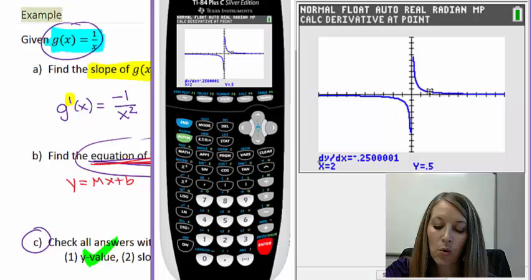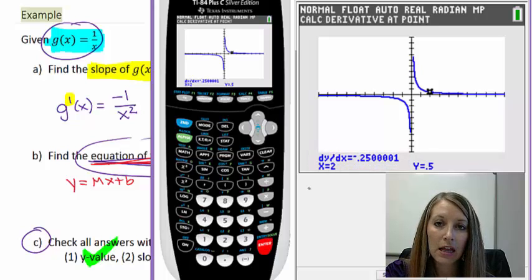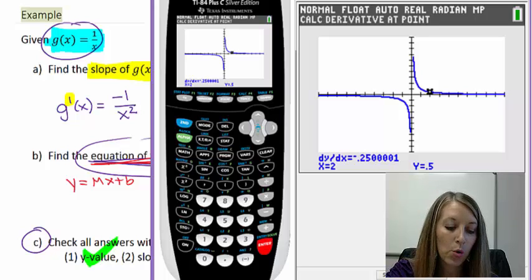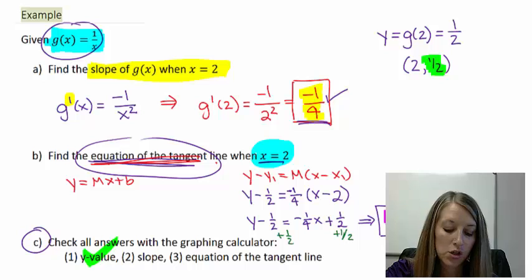Notice it tells you what your dy dx is. This fancy calculator gives you the other things here, but most likely on your calculator at home, it only gives you the dy dx value. Again, it gives it to us as a decimal, negative 2.5, which corresponds to our fraction of negative one-fourth. So we have double-checked the slope.